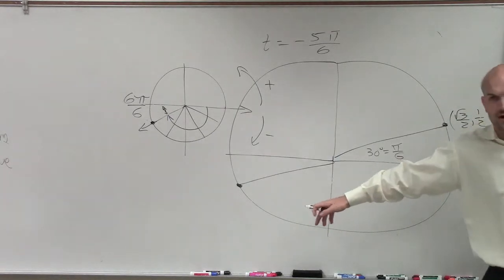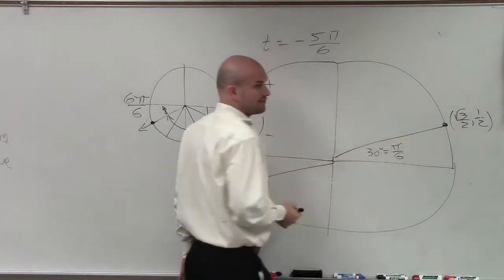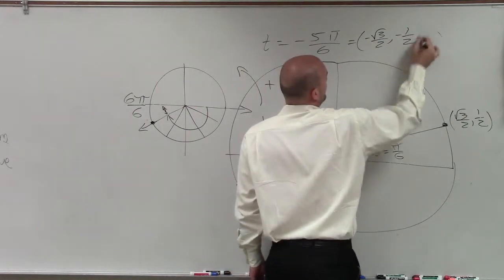So what's negative in the third quadrant? x and y. So therefore, my point is not square root of 3 over 2 comma 1 half. It's negative square root of 3 over 2 comma negative 1 half.